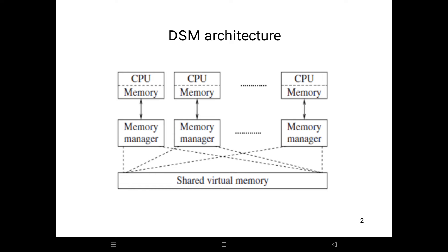A simple message passing scheme is used by the nodes to exchange information. The main memory of the individual node is used to cache pieces of the shared memory space.